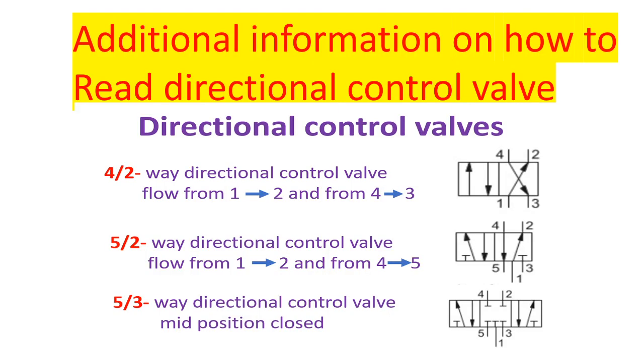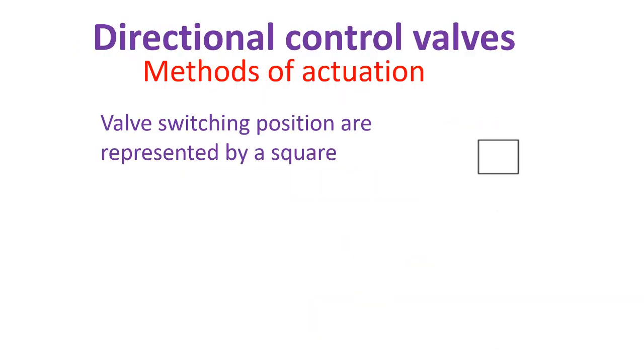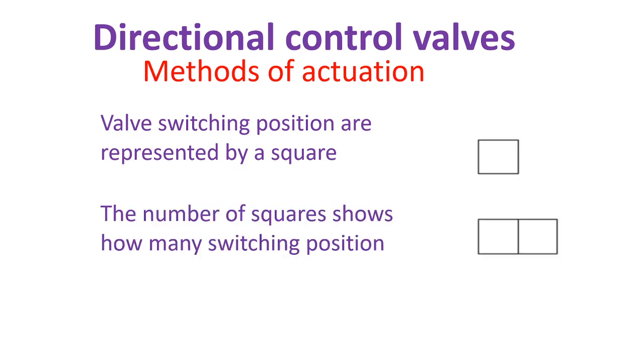Don't skip the video, we have additional information on how to read directional control valves. Now let's get started on how to read directional control valves. Valve switching positions are represented by a square. The number of squares shows how many switching positions.